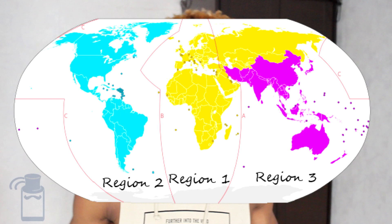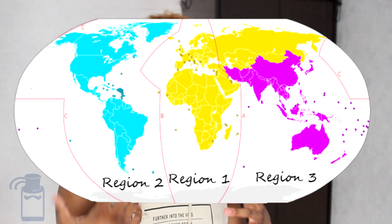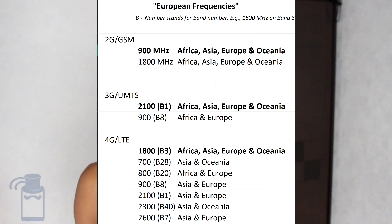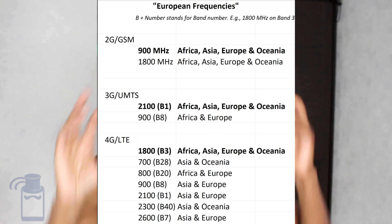Not every country uses the same frequency. The world is split into three different regions where different frequencies are used. In Region 1 and Region 3 — which consist of Africa, the Middle East, Asia, Europe, and Oceania — they primarily use European frequencies, meaning the same base frequencies for 2G, 3G, and 4G. On screen you'll see the frequencies used in these regions; the ones in bold are used in all countries. If you travel within Region 1 and 3 you can expect to use your phone without issues — 2G, 3G, 4G, and 5G in the future.